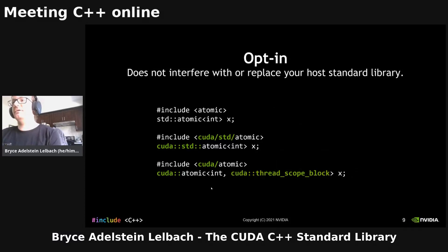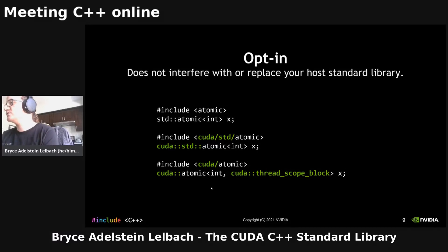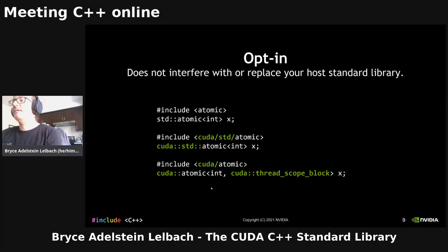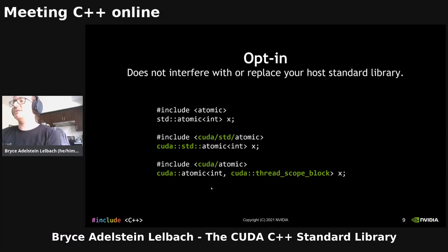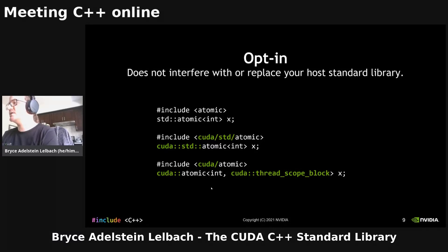And then there's a third namespace, which is just the raw cuda:: namespace. In that namespace, we have some direct extensions of things that are in the standard. For example, for atomic: if you just use std::atomic, that's your host atomic — only usable in host code. cuda::std::atomic you can use in both host and device code. And then cuda::atomic itself is an extended form that has an additional template parameter, but otherwise operates just like a cuda::std::atomic.